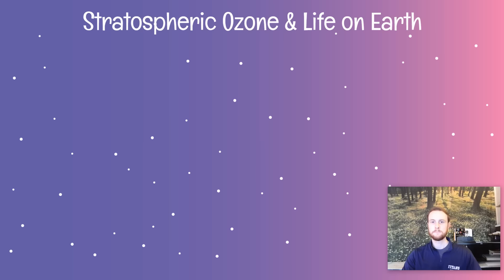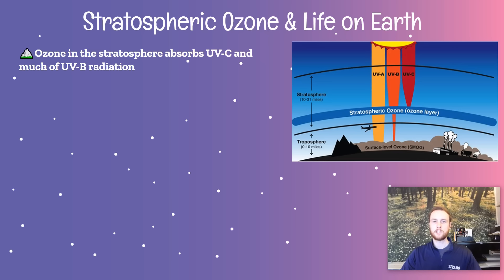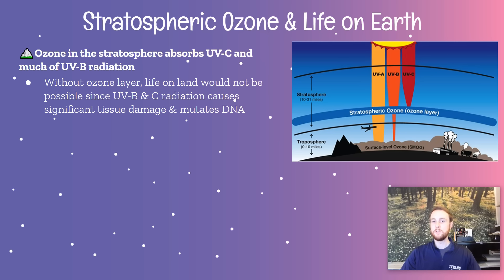We'll talk about why stratospheric ozone is so important to life on Earth. It's very important because it does a couple of beneficial things for humans and any organism on Earth. It's going to absorb both UVB and all of UVC radiation that comes in from the sun. These are wavelengths of UV radiation that are able to mutate the DNA of organisms.